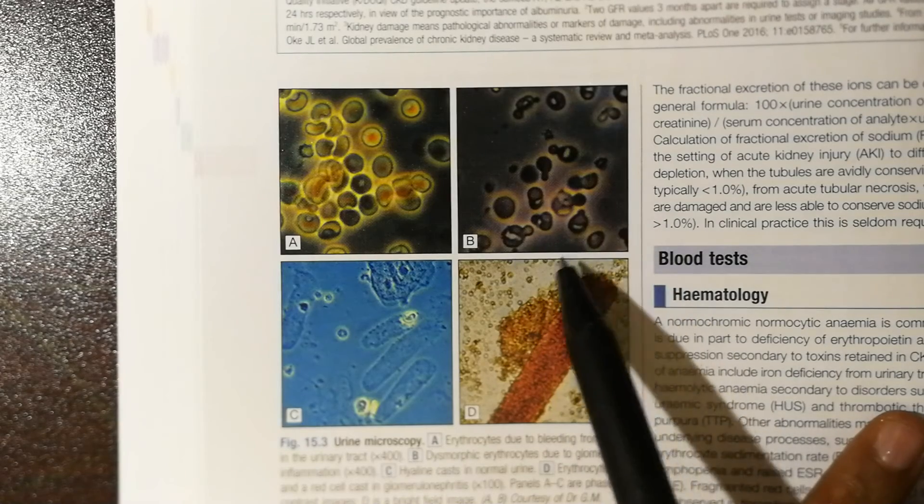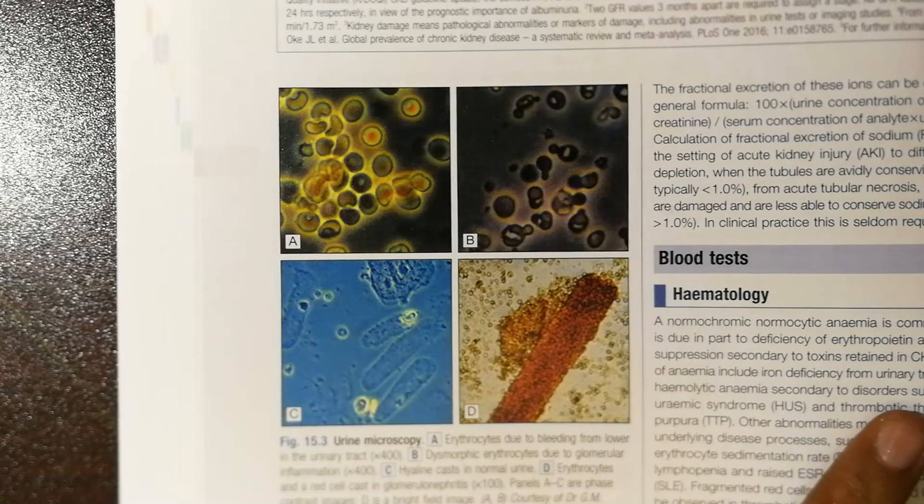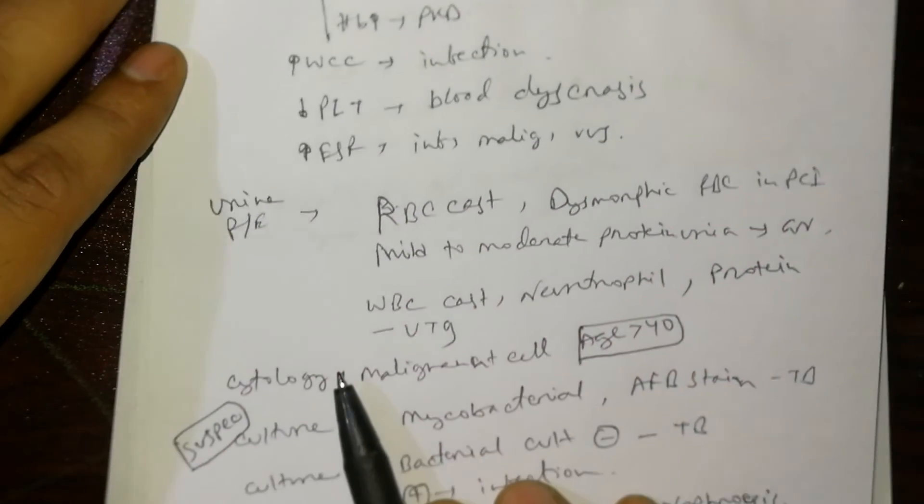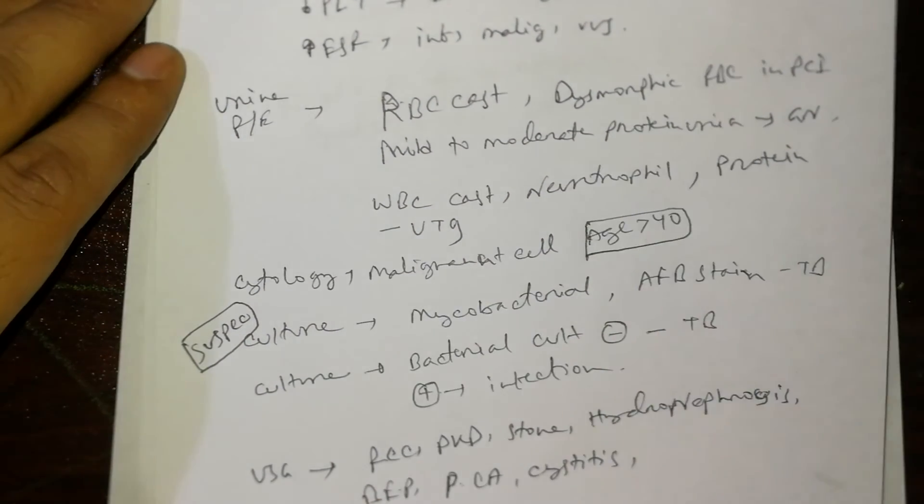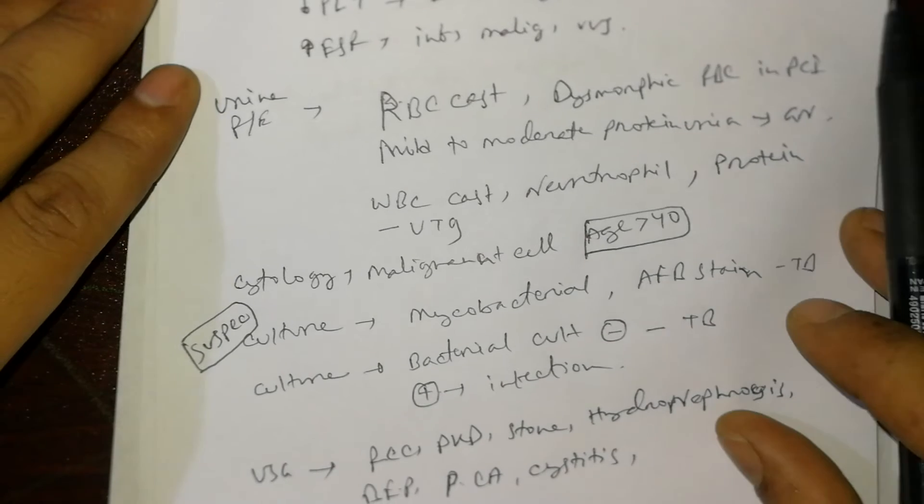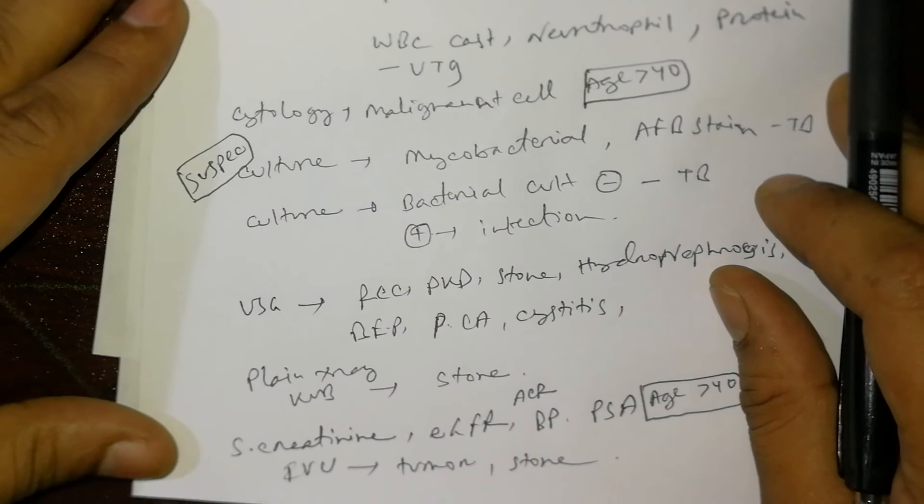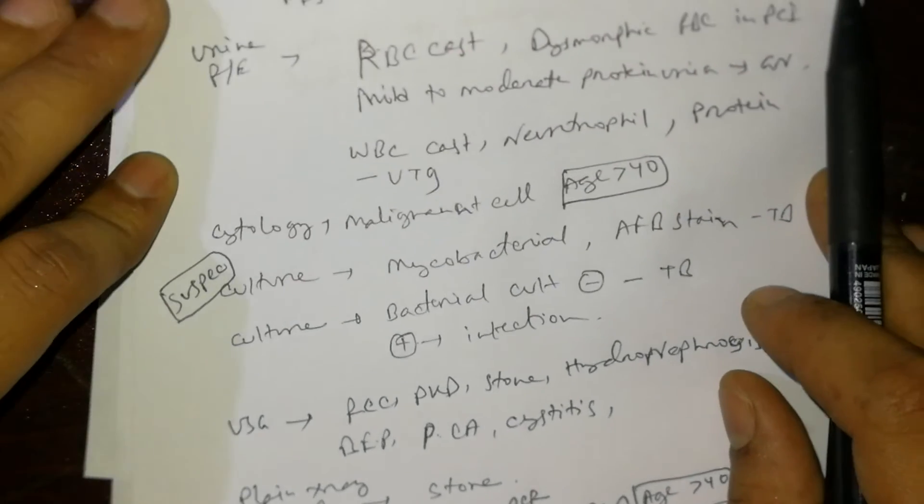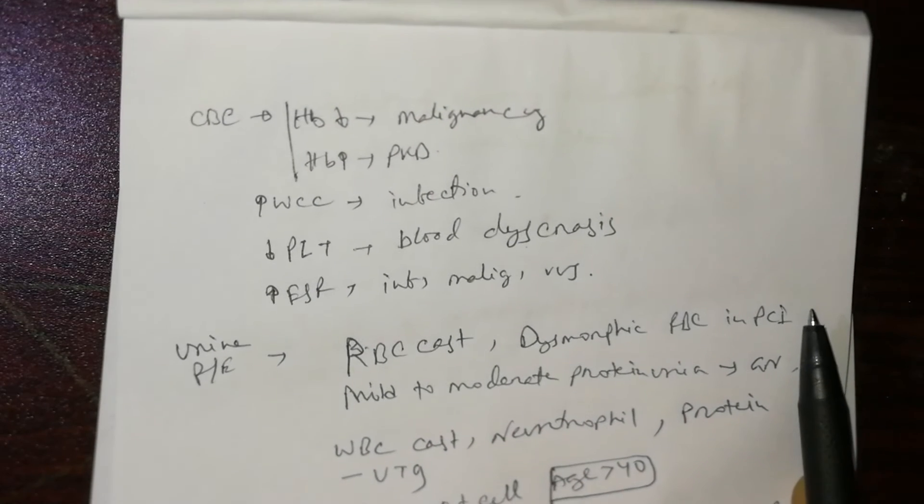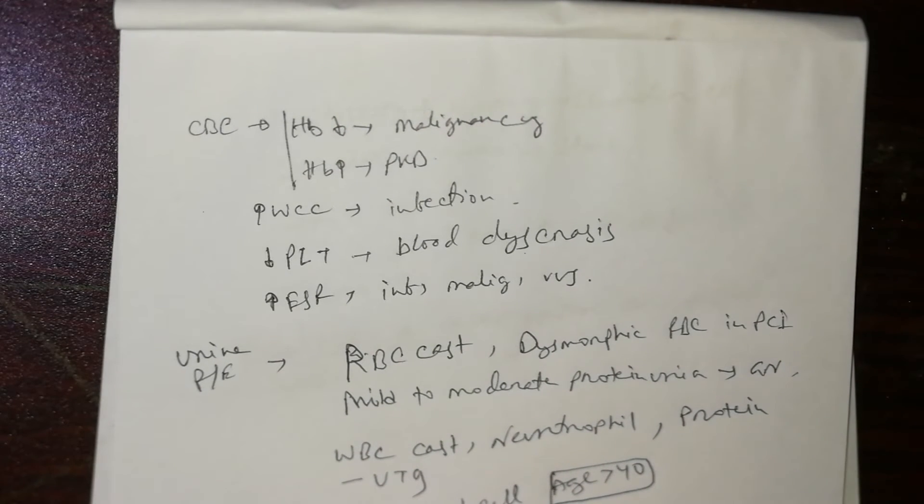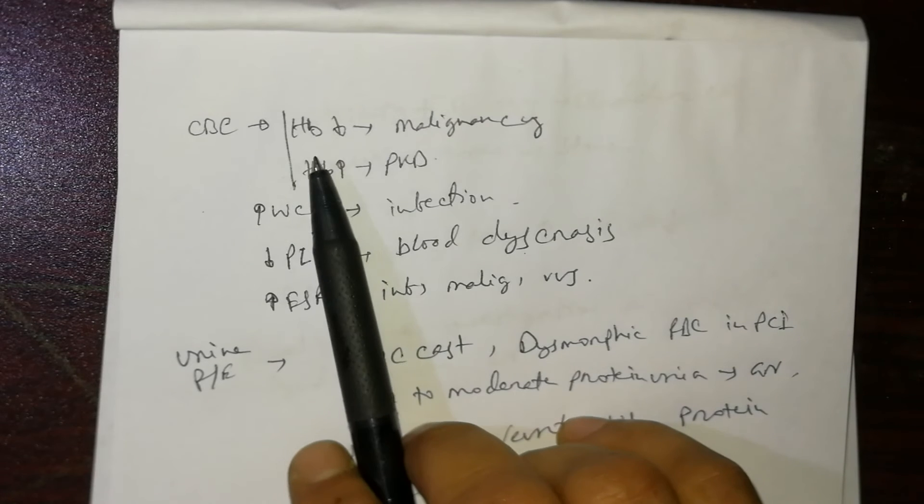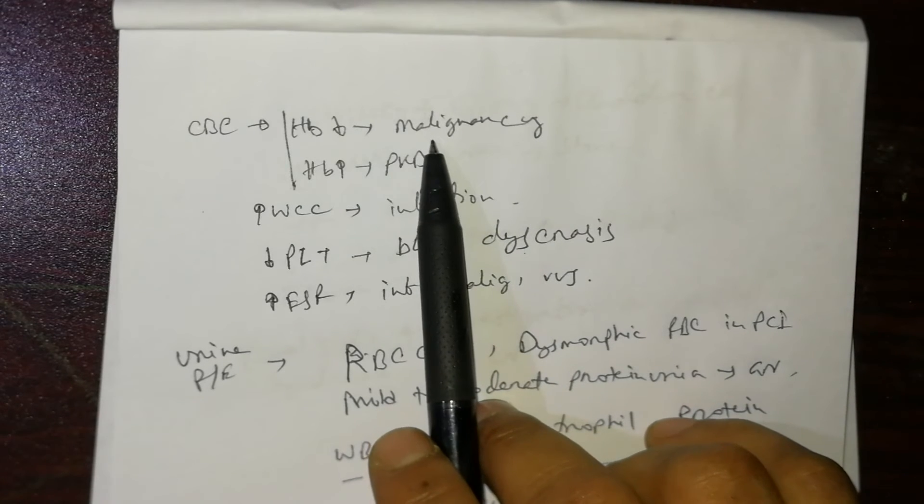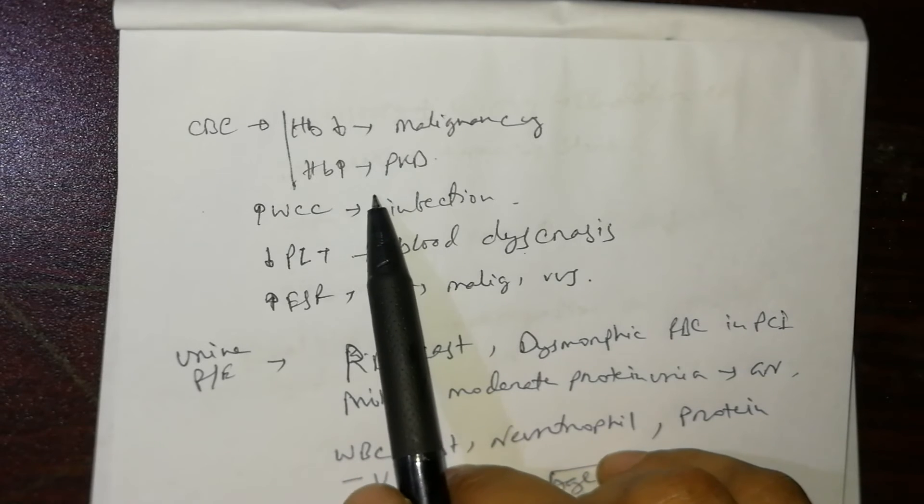Initial investigations include CBC, urinalysis, urine culture, ultrasonography, plain x-ray KUB, serum creatinine, eGFR, and IVU. For CBC: hemoglobin decreases in malignancy and also in SLE and vasculitis. Hemoglobin increases in polycystic kidney disease due to hypernephroma.